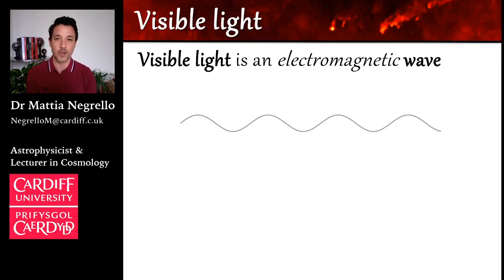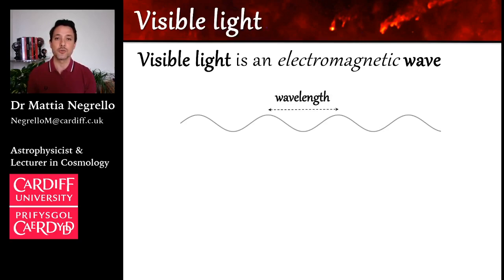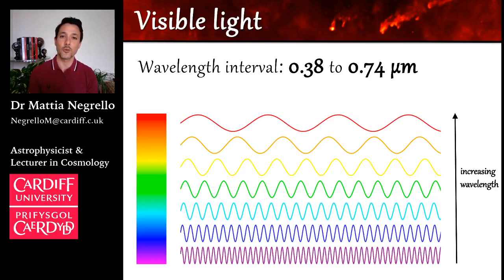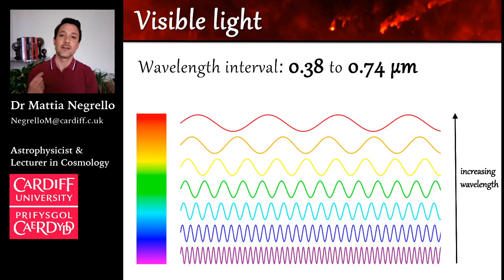A wave is a concept we are all familiar with, and here you can see a schematic representation of a wave. A wave is characterized by a number we call the wavelength, which is the separation between two consecutive crests of the wave. Our eyes are sensitive to electromagnetic waves with wavelengths in a well-defined range that goes from about 0.38 micron up to about 0.74 micron, where a micron is one millionth of a meter. The colors are a consequence of the way our eyes react to electromagnetic waves of different wavelengths.